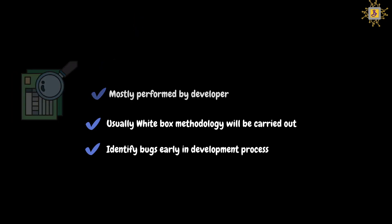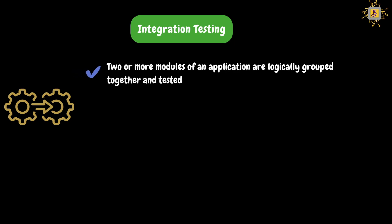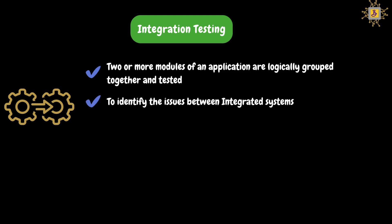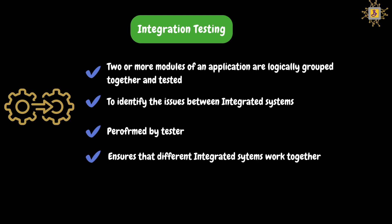Now let's look at integration testing. In this testing, two or more modules or components of an application will be tested together as one group. In our Gmail example, login and check mails are two different components — in integration testing, those two components are tested as a group. This will help the team identify any integration issues between those two components. Integration testing will be performed by functional testers during the testing phase, ensuring that different integrated systems work together without any issues.